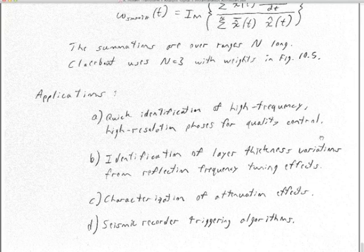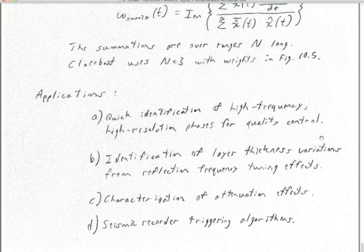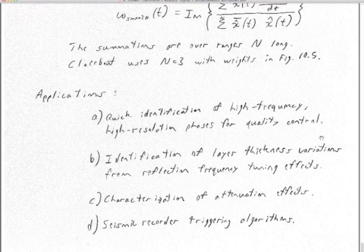How do we use instantaneous attributes? You might run it in the field as you're collecting data for a quick view of whether you're getting high frequency reflections — a quality control issue. Look at the instantaneous frequency in every shot gather to see whether the hyperbolic reflections are low frequency or you're getting some high-frequency high-resolution reflections. If you're not getting enough high frequency, you might decide to do a few more shots or vibe activations at that point.